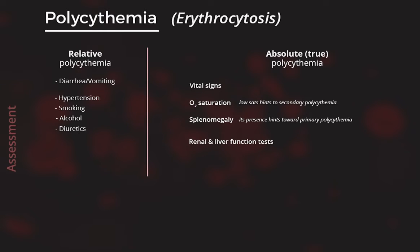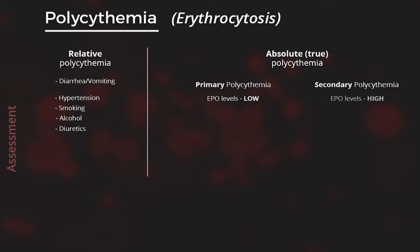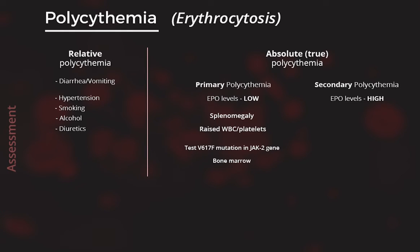Do renal and liver function tests, peripheral blood film microscopy, and measure erythropoietin levels. Measuring erythropoietin levels will help distinguish between primary and secondary polycythemia. In primary polycythemia, it is expected to be low, while in secondary it will be high. Splenomegaly and the presence of additional blood cell abnormalities hint toward primary polycythemia, where erythropoietin levels are also low. Since polycythemia rubra vera is the main differential in primary polycythemia, the test is done for the V617F mutation in the JAK2 gene, which is present in over 90% of cases. Bone marrow examination may be needed in some cases.